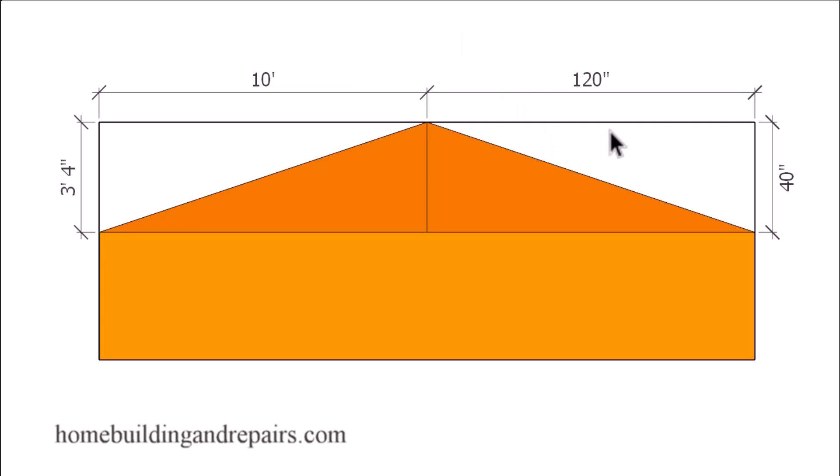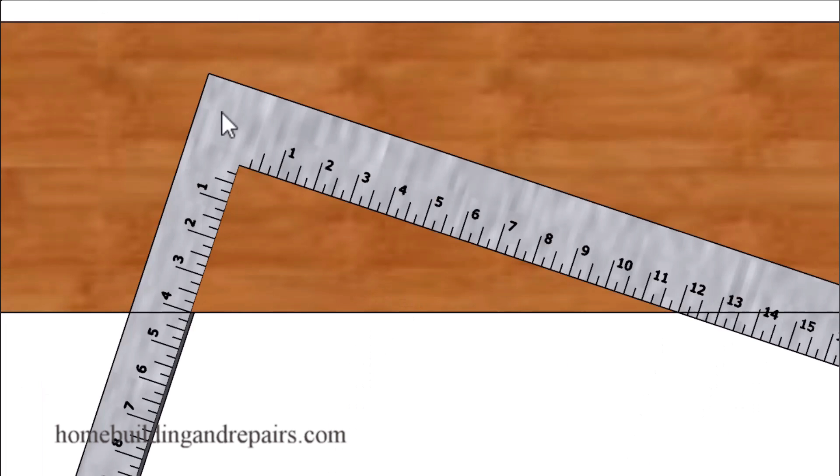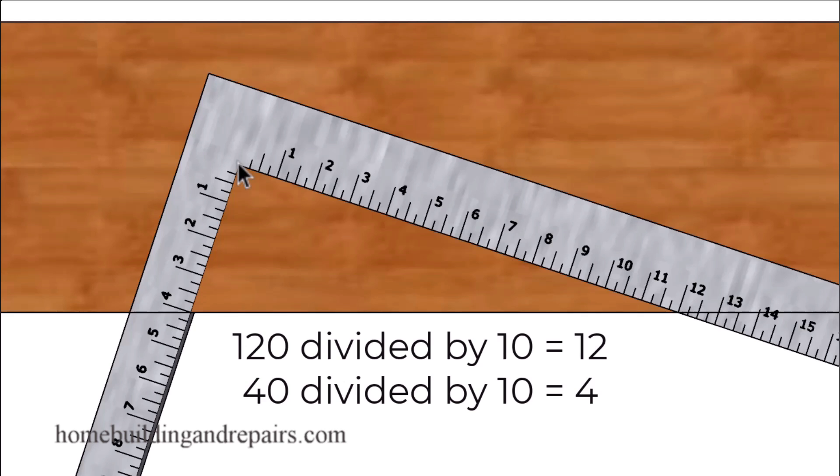And since this would provide us with 10 units for our ratio, let's go ahead and set up our framing square. And that would look something like this with a four inch measurement on one side of our framing square and a 12 inch measurement on the other side of the framing square.